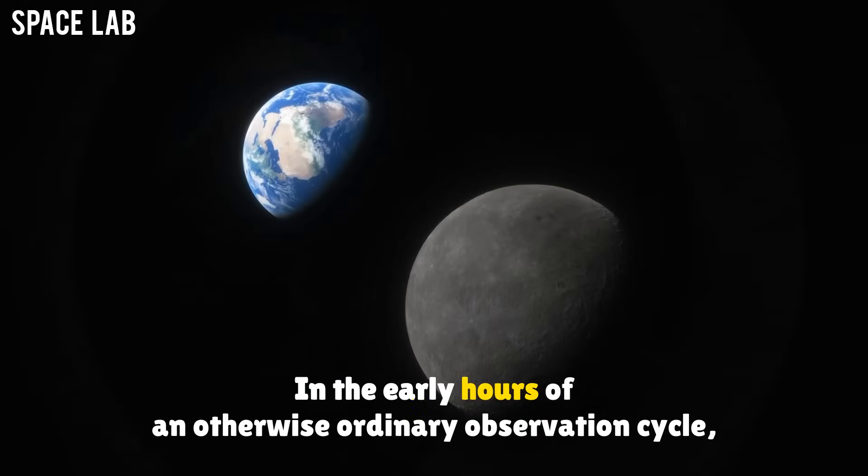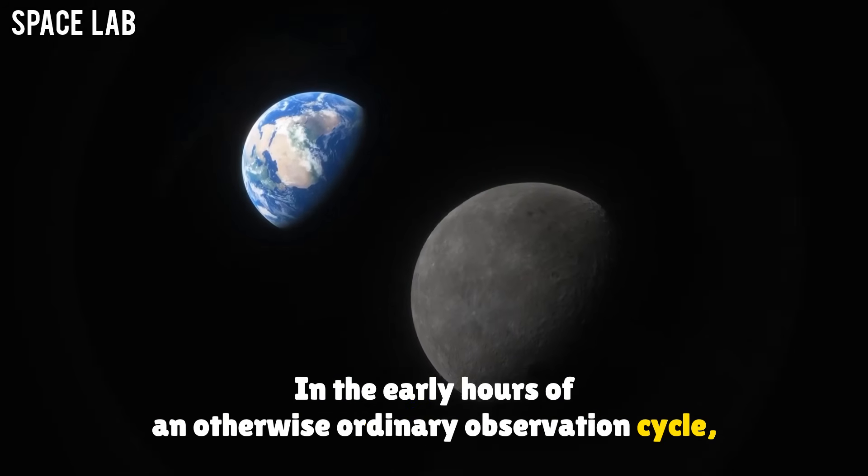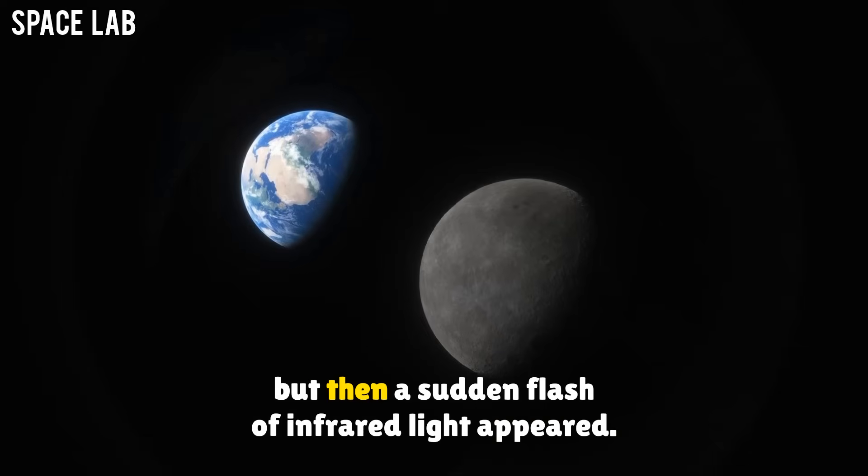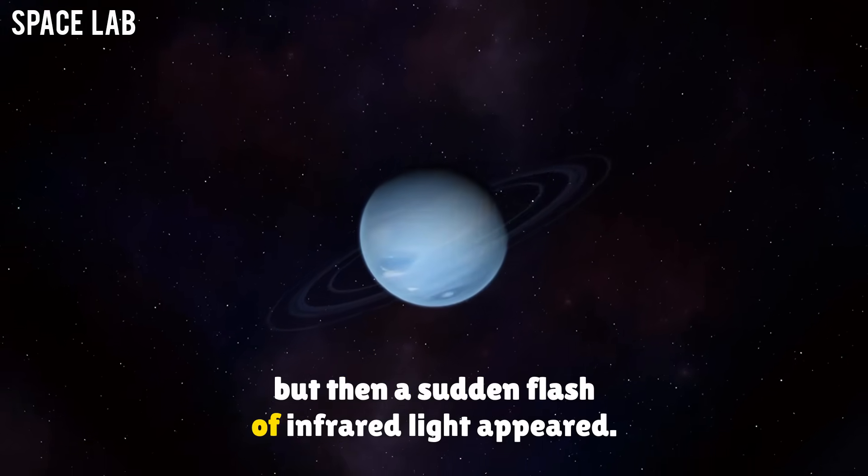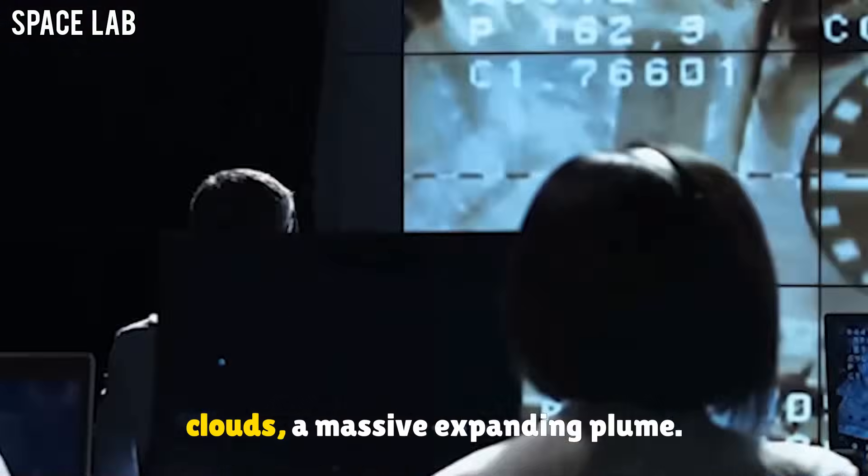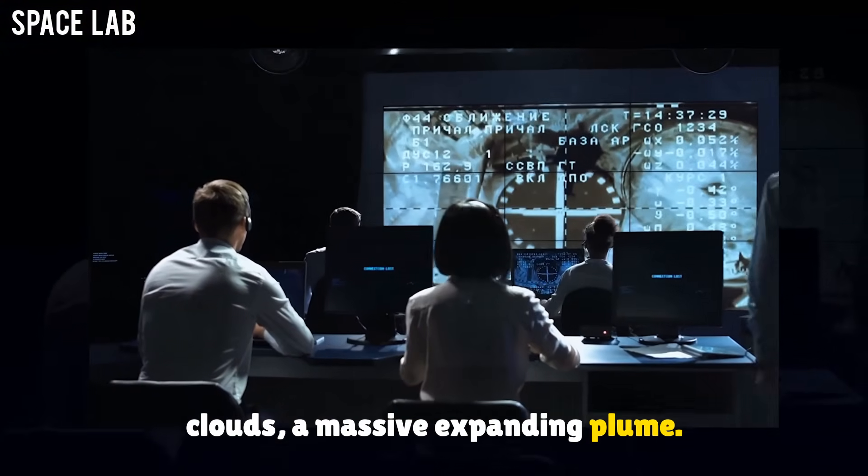In the early hours of an otherwise ordinary observation cycle, Webb was scanning Neptune as part of a routine program. But then, a sudden flash of infrared light appeared. It was not from Neptune itself, but from above its clouds, a massive expanding plume.